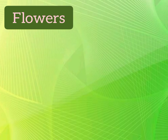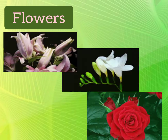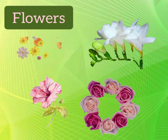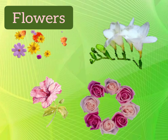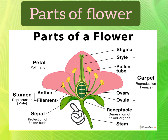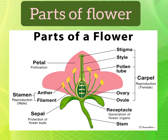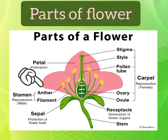Our next topic is flowers. Flowers are the most beautiful part of a plant — they are found in different colors, sizes and shapes. A complete flower has the following parts: sepals, which are green leaf-like structures that protect the flower when it is a bud; petals, which are the colored part of a flower that attract insects with their color and fragrance; and stamens, which are the male part of a flower — the plant makes pollen in the part of the stamen called the anther.